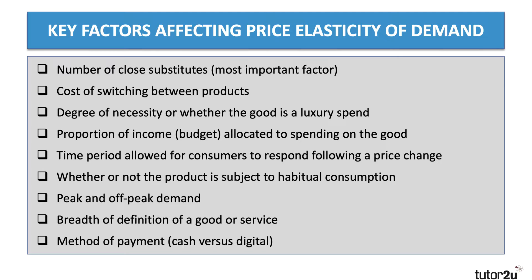The proportion of your income — for example a monthly or weekly budget — allocated to spending on the good is often regarded as a key factor. When something is a relatively small percentage of your budget, a price change won't fundamentally affect your ability to buy it, making demand inelastic. If it's a big ticket item taking up a hefty percentage of your budget, you may well become more price sensitive.